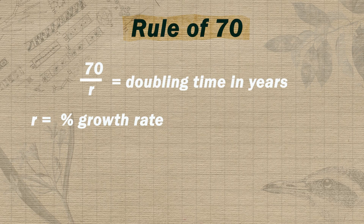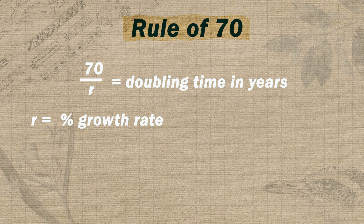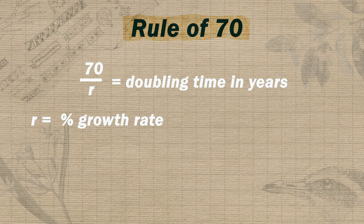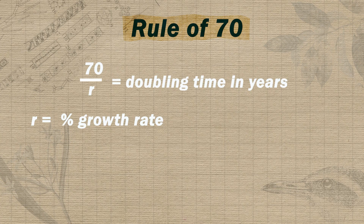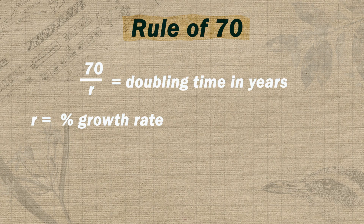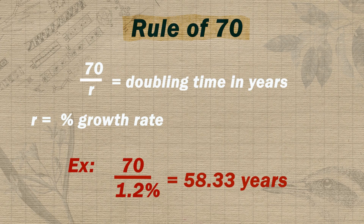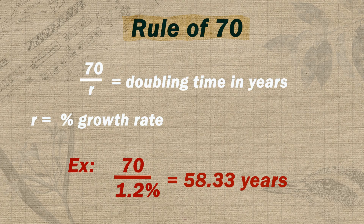The final type of math problem you need to be able to do in unit three is the easiest to perform but has one of the weirdest origin stories of any equation ever — and that's the rule of 70. The rule of 70 is a super simple way to estimate the number of years it will take for a population to double in size. All you do is divide 70 by the population growth rate percent, and you get a rough estimate of the doubling time. For example, to calculate how many years it would take for Bolivia's population to double, divide 70 by Bolivia's growth rate of 1.2%, getting an answer of around 58.33 years.